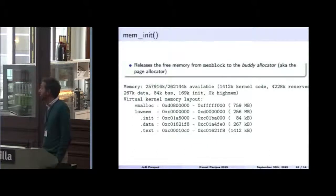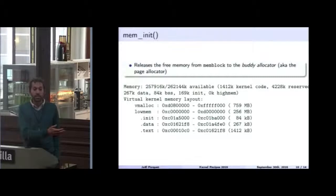Then we have mem init, which is very small. The only point in mem init is to release all of the free memory. So the memory that has not been allocated or reserved by the mem block layer into the buddy allocator, which is also known as the page allocator. And actually right after that, the kernel is able to start the slab allocator and the vmalloc infrastructure, because both of them are based on the buddy allocator.